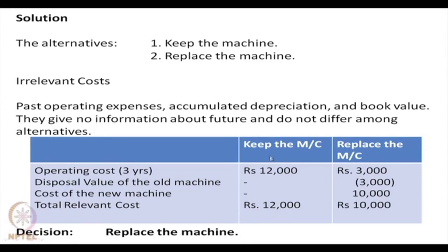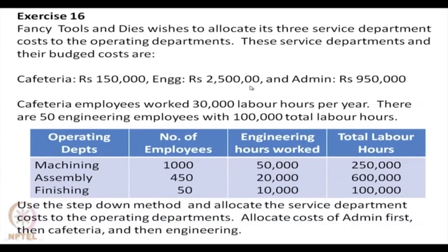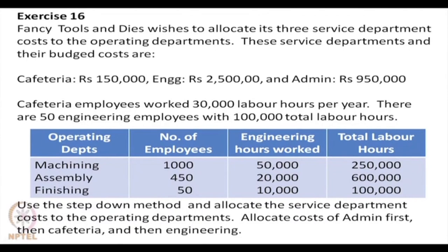This problem illustrates that certain costs like book value, accumulated depreciation and past operating expenses are not relevant. We must consider only the relevant costs — those that differ among alternatives and have future implications — when evaluating the two alternatives.